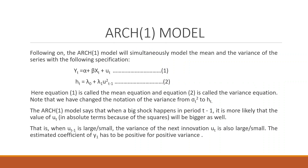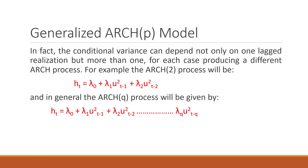Specifying the ARCH(1) model: Yt equals alpha plus beta*Xt plus mu_t, and the variance equation is ht equals lambda_0 plus lambda_1 times mu squared_{t-1}, where ht simply replaces sigma_t squared. The ARCH(1) model assumes that when a big shock occurs at time t-1, the value of mu_t is also likely to be large — when mu squared_{t-1} is large or small, the variance of the next innovation mu_t will also be large or small. Now, to generalize to an ARCH(p) model: instead of only mu squared_{t-1}, if present volatility depends on more than one time period — including mu squared_{t-2} up to mu squared_{t-q} — then we call it a generalized ARCH(p) model.